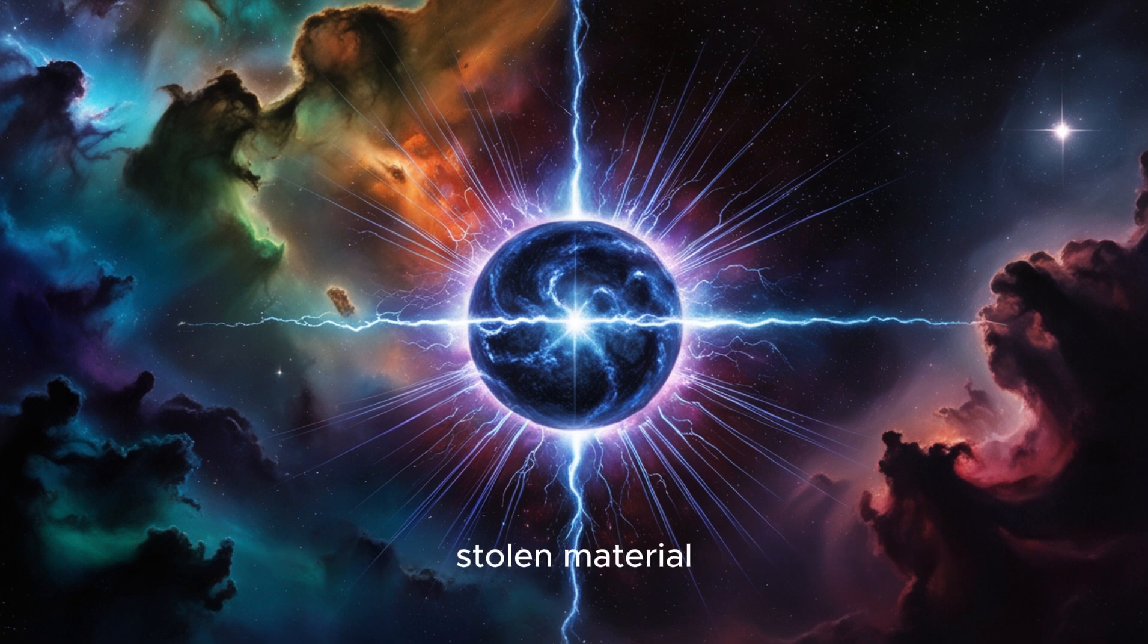So what happens to all that stolen material? It forms a swirling disk of superheated gas around the neutron star and releases incredible amounts of X-rays. These binary systems are actually some of the brightest X-ray sources in the sky. By studying them, we can learn a lot about how matter behaves under extreme gravity and magnetic fields.